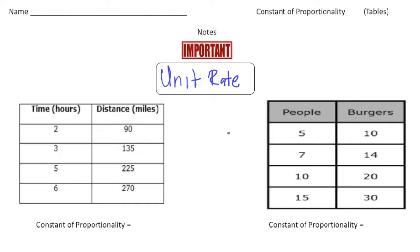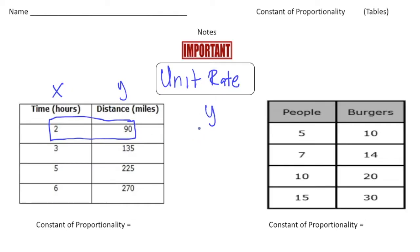We're going to figure out the unit rate from tables. Notice we have two different columns — the first column is time in hours and the second column is distance in miles. We're going to focus on one set of data. Time is the x values and distance is the y values. The way you get the unit rate or constant of proportionality is always the y value divided by the x value.